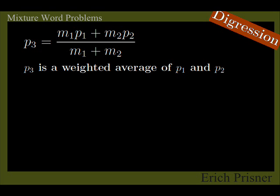If M1 equals M2, P3 sits just in the middle between P1 and P2, otherwise it sits closer to the percentage belonging to the higher mass, the same result as our intuitive reasoning above.